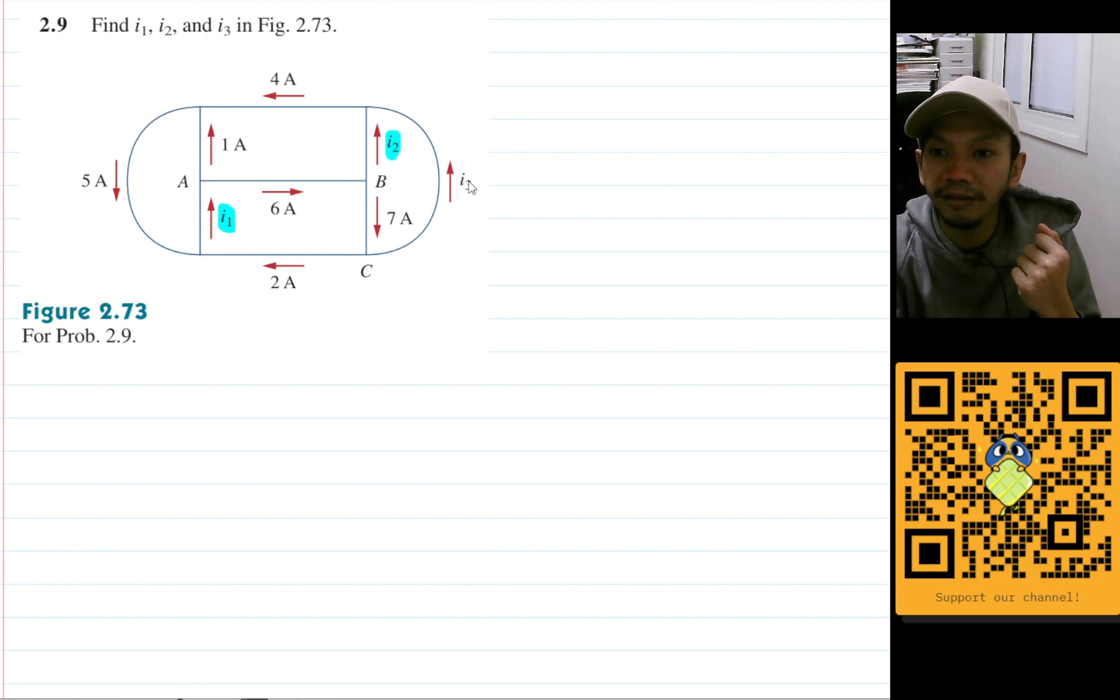And where is i3? i3 is here. So maybe let's do KCL here at node A.